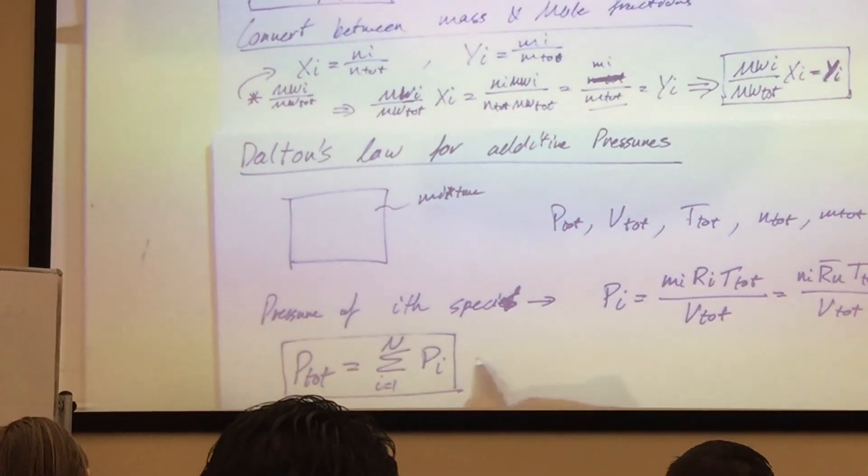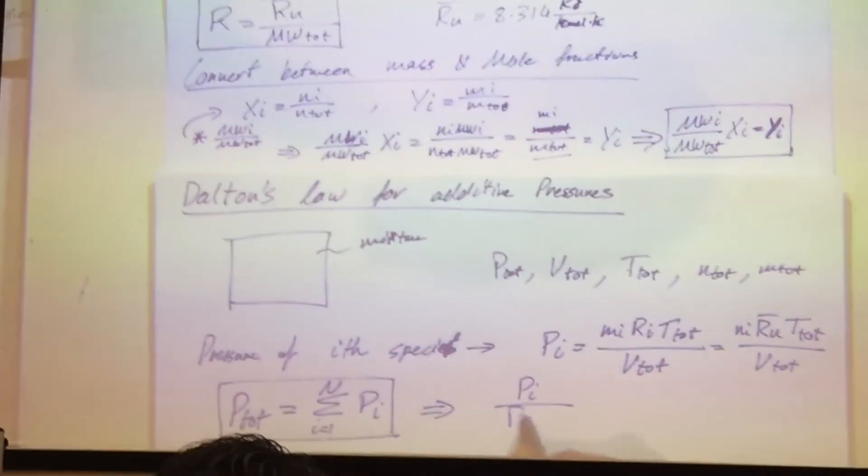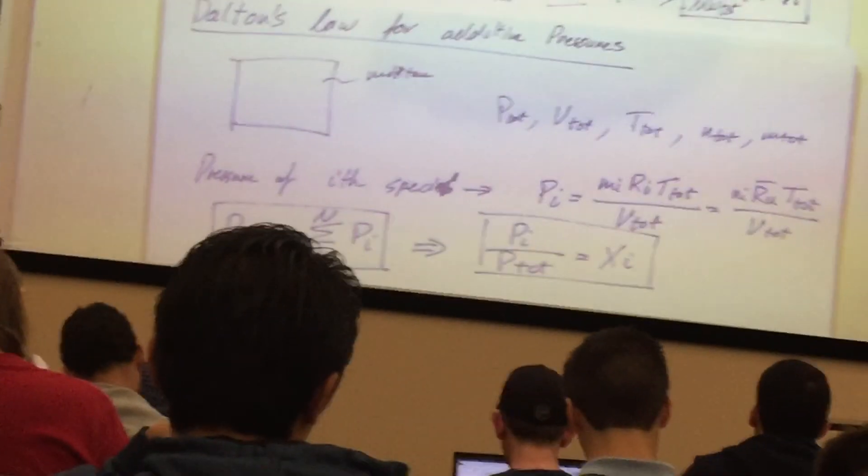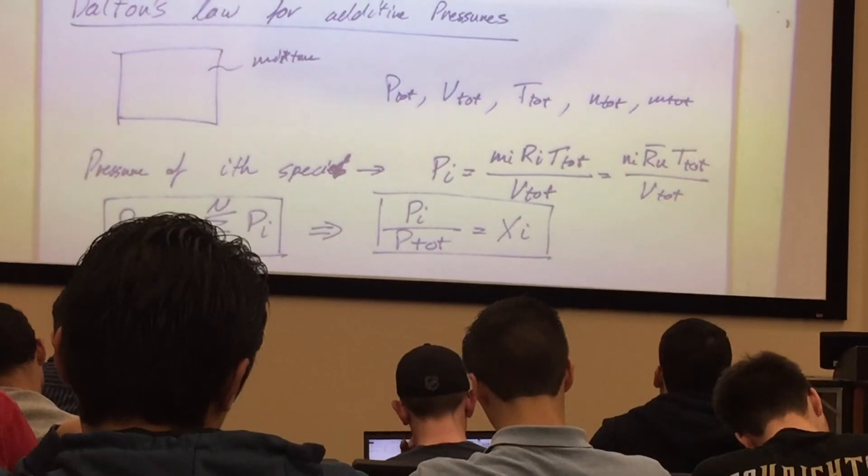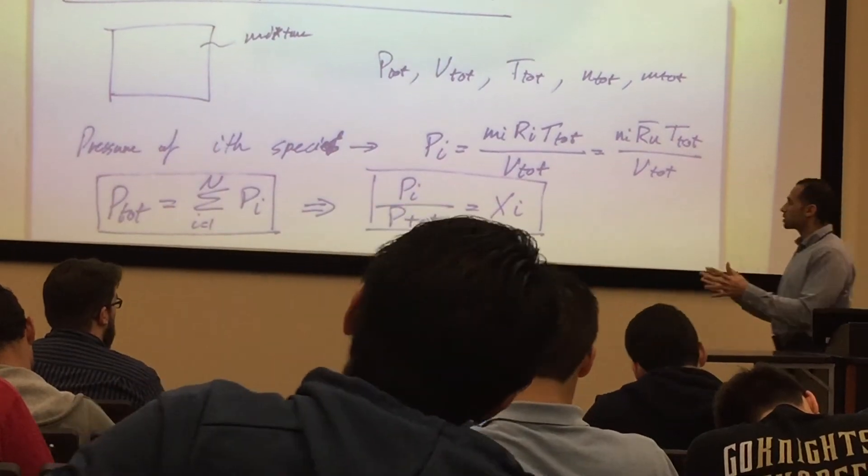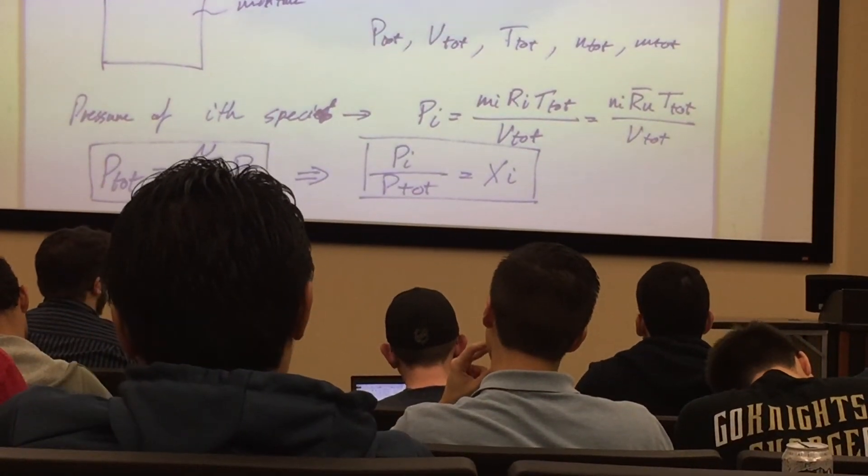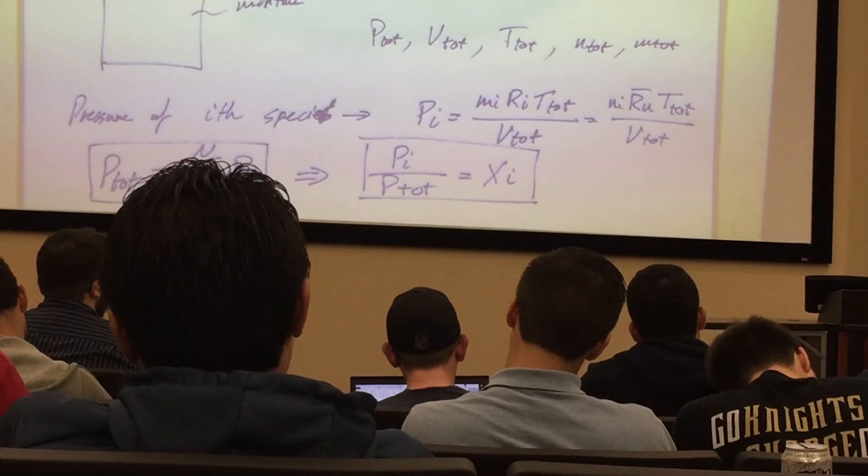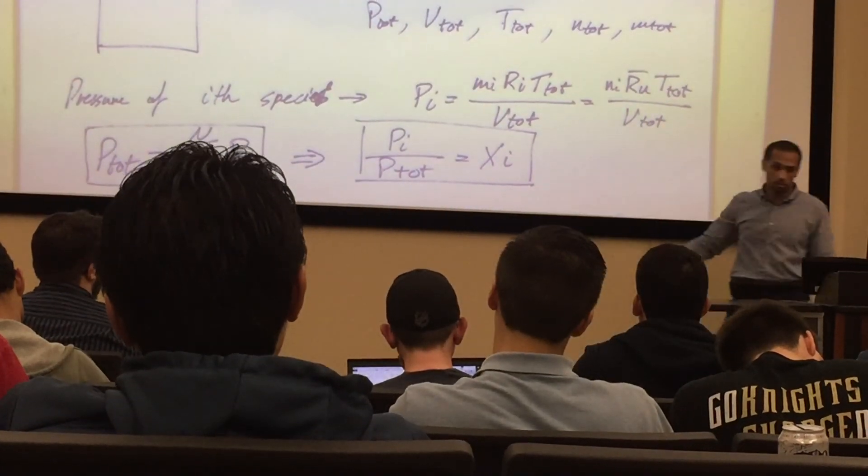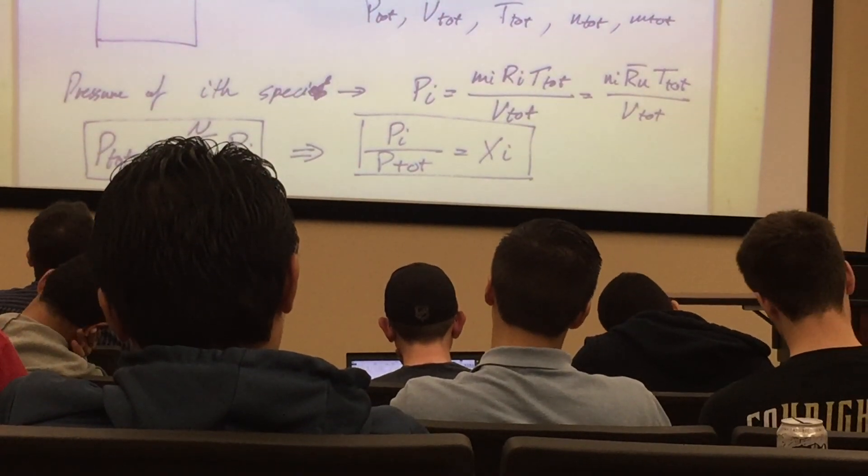And that summation, if I take the ratio of Pi over P total, is gonna give me my mole fraction. So essentially, think of it this way: I have two individual pressures for two species, I mix them together, I get a total pressure, but how do I decompose the individual pressures of each species? By using the mass fraction based approach, or the mole fraction, you're gonna get the same answer. So if you prefer mass fraction, just use this equation, and if you prefer mole fraction, use this equation. Okay? All right.